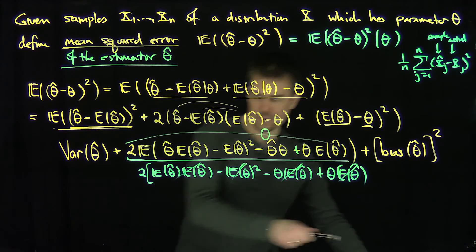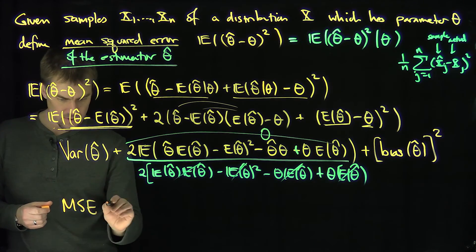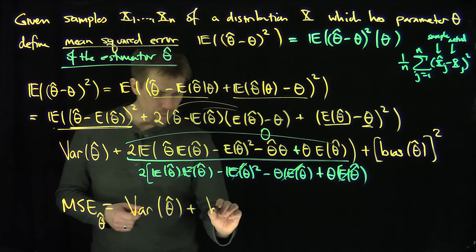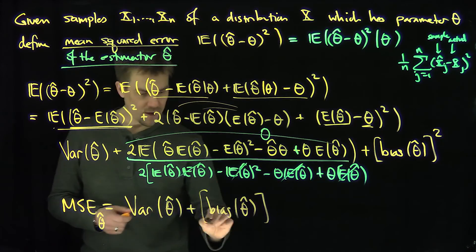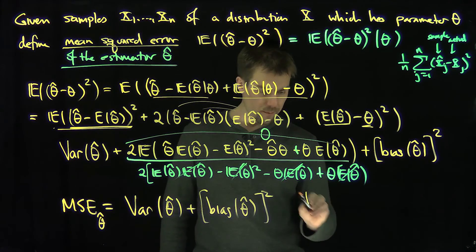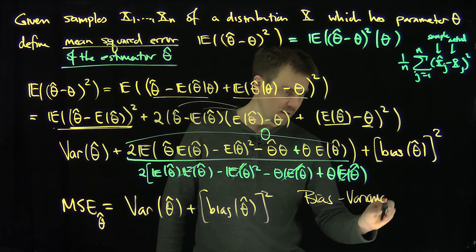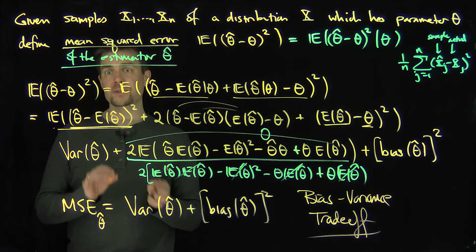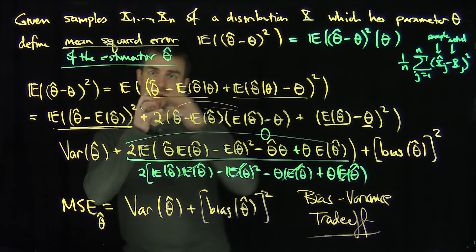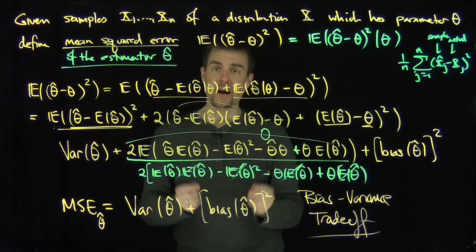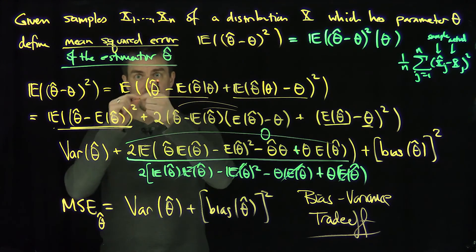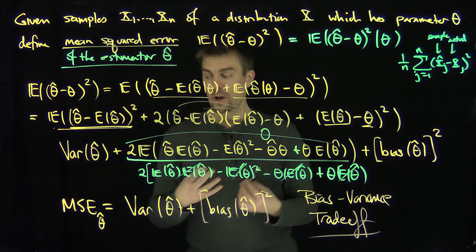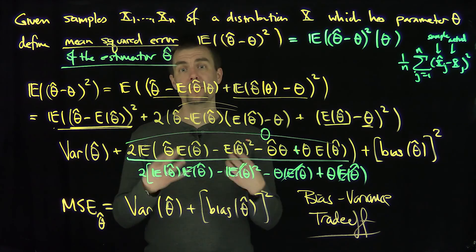Hence, the mean squared error of your estimator theta-hat equals the variance of that estimator theta-hat plus the bias of that estimator, quantity squared. This is called the bias-variance trade-off. The two principal contributors to MSE are the variance — how much the estimator spreads — and the bias — how far away it is from the actual prediction. For models like linear regression, there can also be an irreducible error from general randomness in the problem.